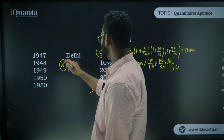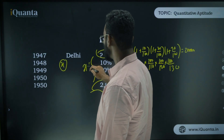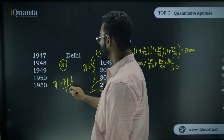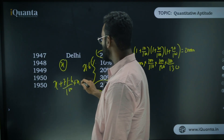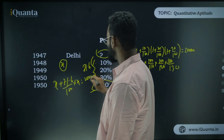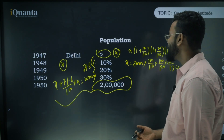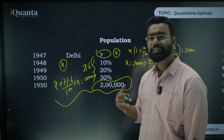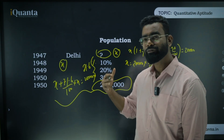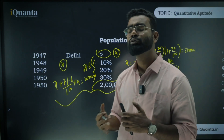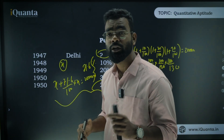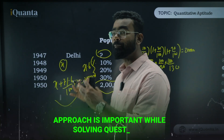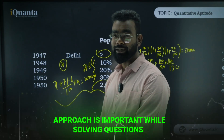Alternatively, you can write: x + 71.6/100 × x = 200,000, and solve for x the same way. Either approach works for this type of reverse population question. The approach is very important — remember how I am solving and give a lot of respect to the method whenever you try these questions.